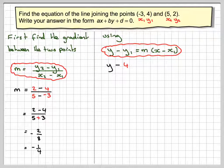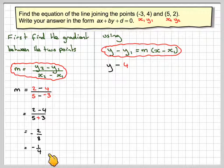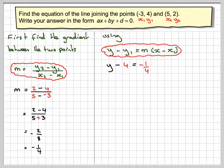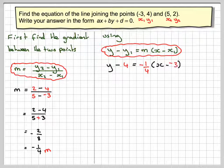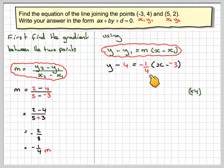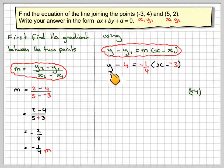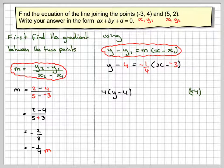y - 4 equals my gradient m, -1/4. Write your fractions one above the other when you do this. x - x1, minus minus 3.